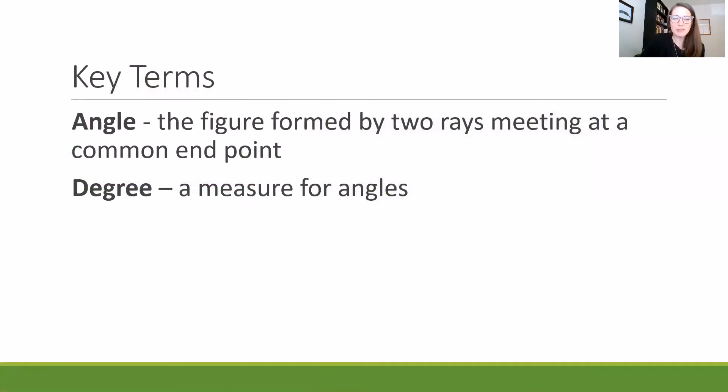Let's start with a couple of key terms. First of all, an angle is the figure formed by two rays meeting at a common end point. We'll look at some examples of where angles are in different shapes today. And a degree is a measure for the angles. It tells us how big or small that angle is with a number.